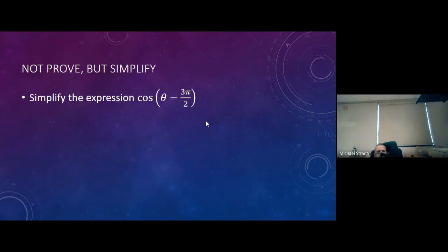So prove, not prove, but simplify. So now they're not telling you what it should be. So simplify the expression cosine theta minus 3π over 2. This setup is going to be the same. Since it's a minus, we're going to find the products of their cosine and add to that the product of their sine. So it would look like that: cosine θ cosine 3π over 2 plus sine θ sine 3π over 2.